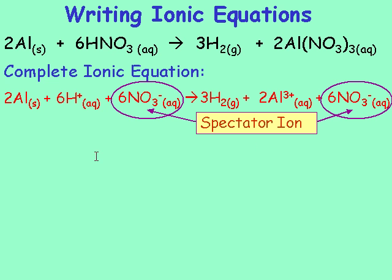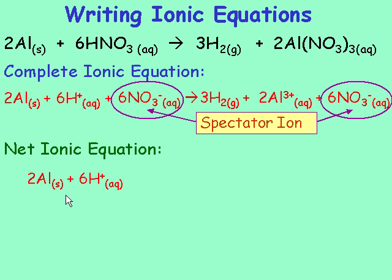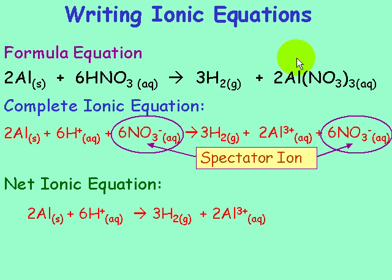Now we can write what is called the net ionic equation. In the net ionic equation, we leave out the spectator ions, so we are left with these two things on the left. We put the arrow, and on the right we have 3 H₂ and 2 Al³⁺. The first equation, without any individual ions, is called the formula equation. In the second equation — the complete ionic — each aqueous substance is dissociated into its individual ions. In the third equation, we leave out the spectator ions — that is called the net ionic equation.